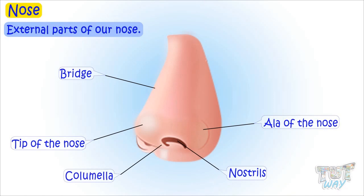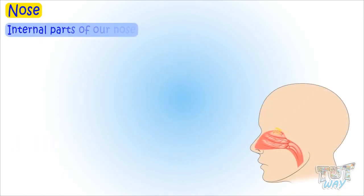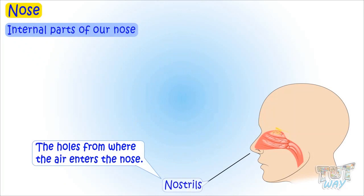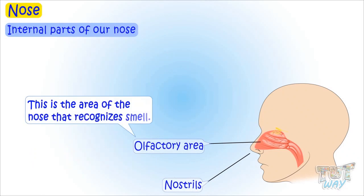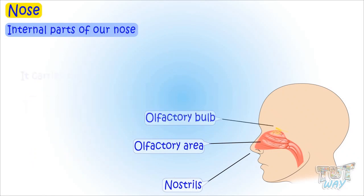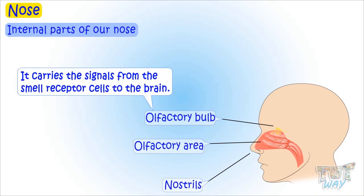Now let's learn the internal parts of our nose. Nostrils are the holes from where the air enters the nose. The olfactory area is the area of the nose that recognizes smell. The olfactory bulb carries the signal from the smell receptor cells to the brain.